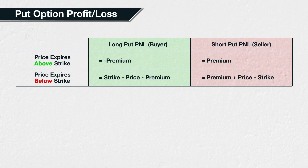This table shows how to calculate the profit or loss of a put option position for either the buyer or the seller. To keep things simple, we've left out the position size, i.e. the contract multiplier and the number of contracts. What we are doing here is calculating the value of the put option at expiry, then adjusting for the premium to give the final profit or loss.